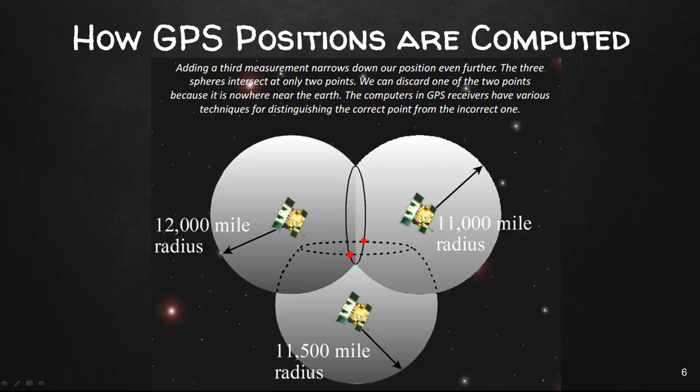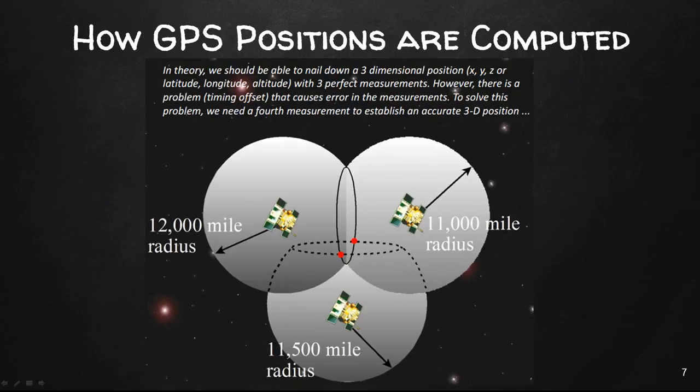So in theory, we should now know where we are on earth's surface, or our receiver is on earth's surface. We should know our x, y, and z, or our latitude, longitude, and altitude with this measurement.